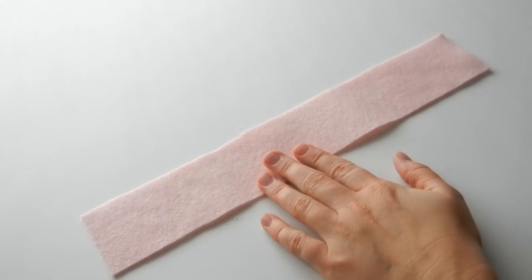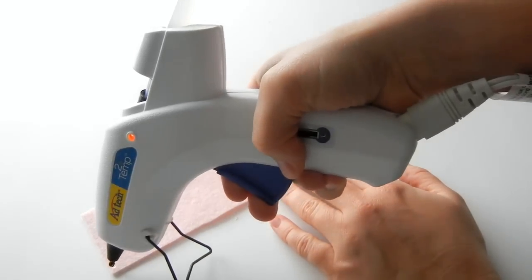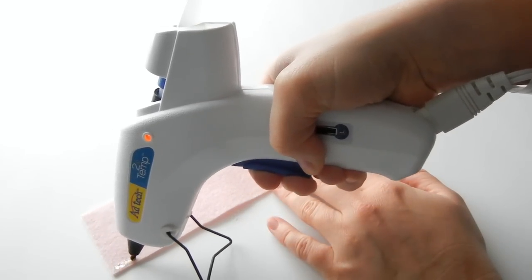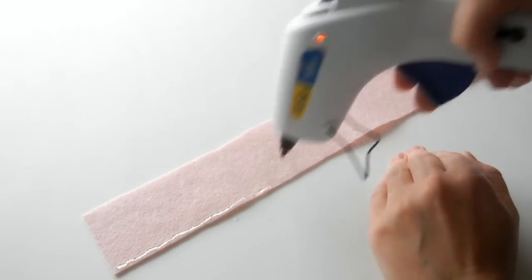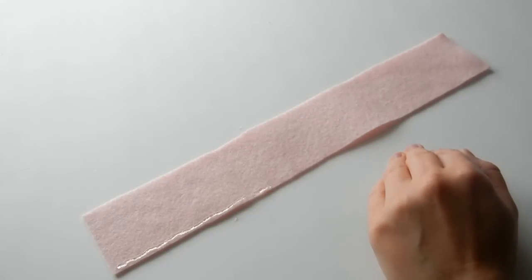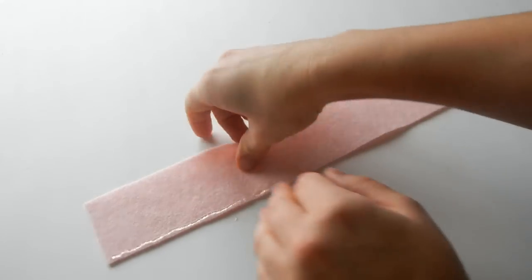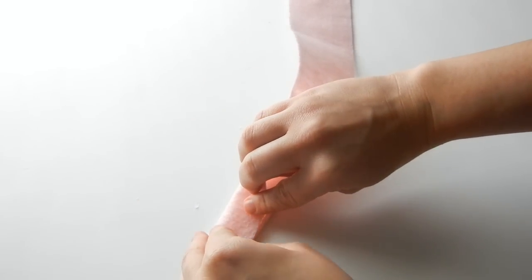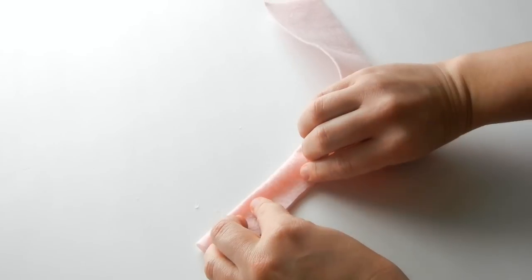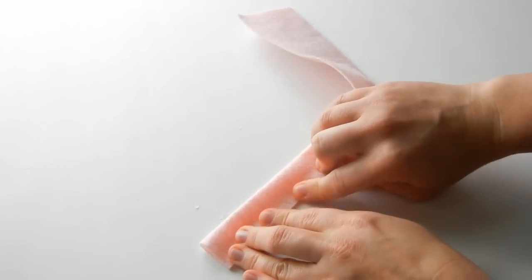we're going to take our hot glue gun and go along the bottom. I'm just doing a little bit at a time. Fold it down so it meets the edges together.